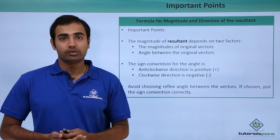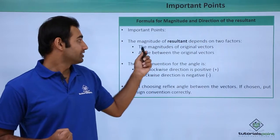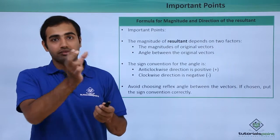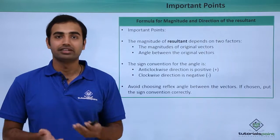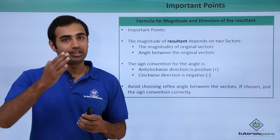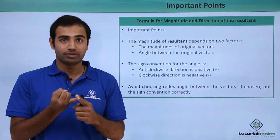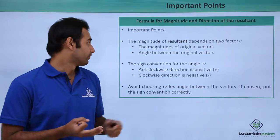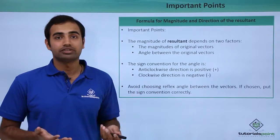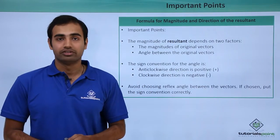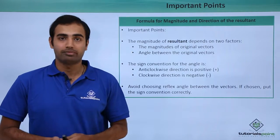Some important points about this derivation: the magnitude of the resultant depends on two factors — first, the magnitudes of the original vectors (modulus of a and modulus of b), and second, the angle between them (theta). In the formula S = √(a² + b² + 2ab cos theta), we have dependence on a, b, and theta. The sign convention for the angle must be chosen properly: anti-clockwise is positive and clockwise is negative, exactly as in trigonometry in mathematics.